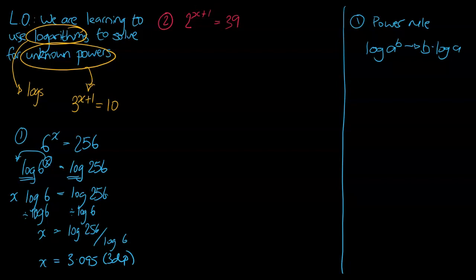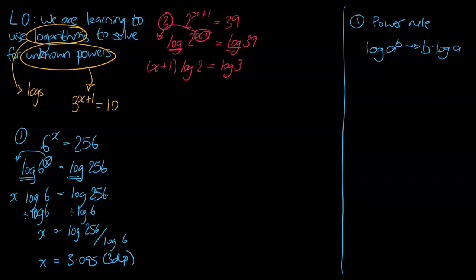Unknown powers means we've got to log that side — it has the effect of undoing unknown powers. We've done it to one side, so we've got to do it to the other side as well. I've logged both sides. I'm then going to use the power rule and move the power out front. Because it's two parts, I'm going to put it in a bracket: (2x+1) log 2 equals log 39.